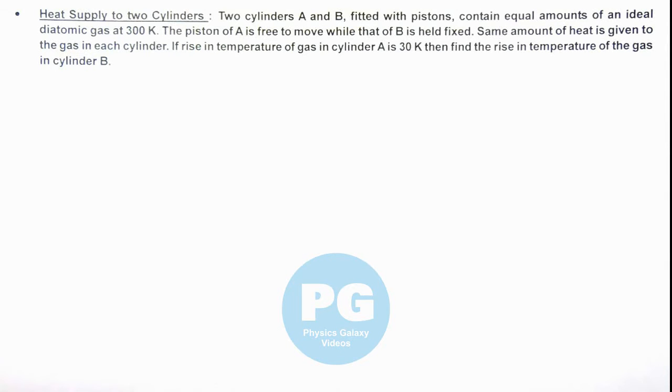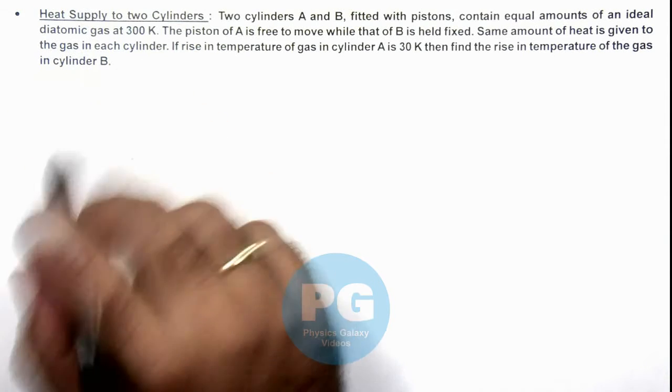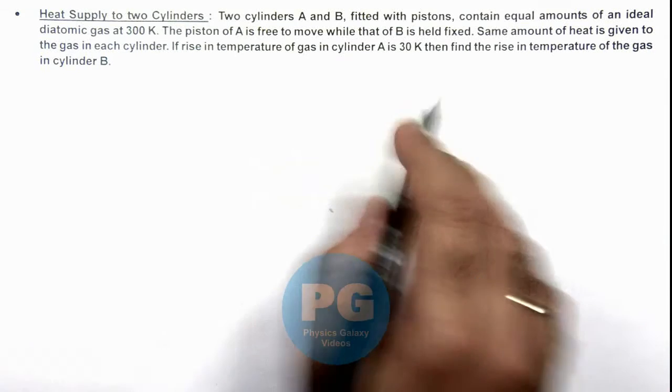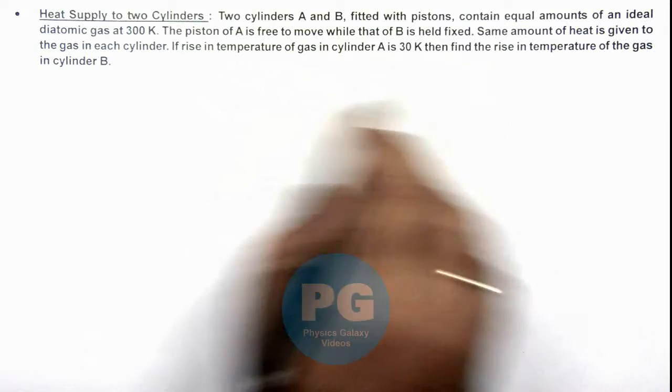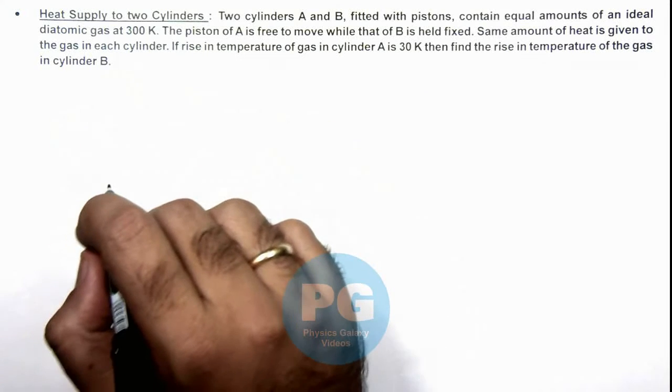In this illustration we'll analyze the heat supply to two cylinders. We are given that two cylinders A and B, fitted with pistons, contain equal amounts of an ideal diatomic gas at 300 Kelvin.